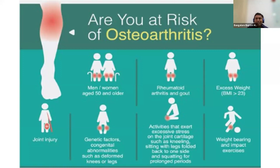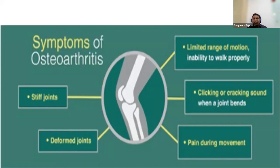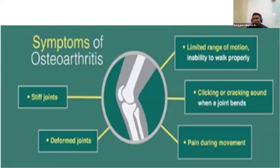Osteoarthritis is a very common type of joint pain seen in the elderly and it's very important to identify, because if you don't, it can prolong the damage. Symptoms include a stiff joint — though unlike in rheumatoid arthritis, the stiffness does not last long. The joint could be deformed, not looking normal in its position. There is difficulty in moving the joint or walking. You might hear a clicking or cracking sound especially when bending the joint, or feel a crack when you place your hand on the joint, and there may be pain on movement.